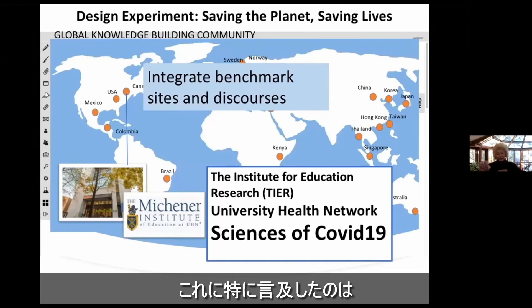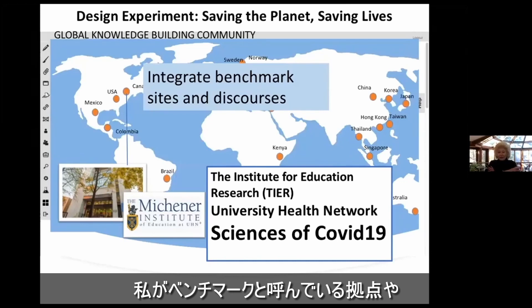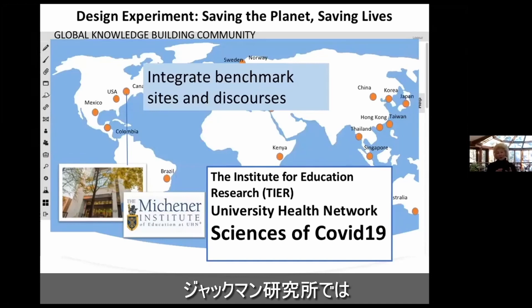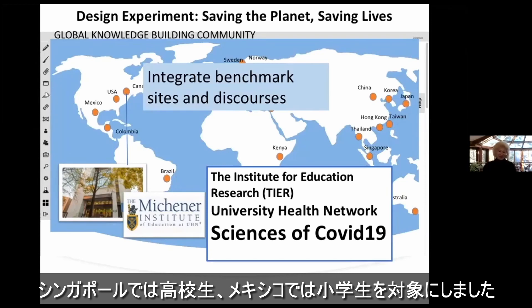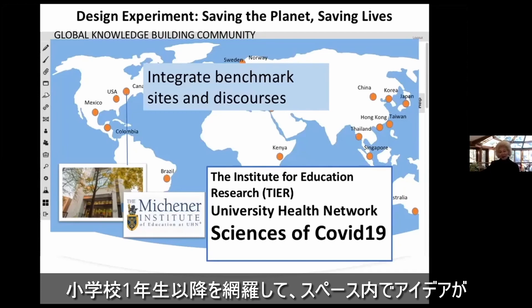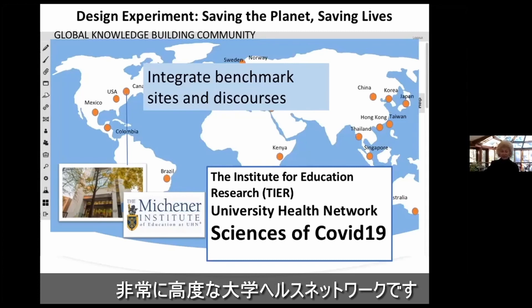I mentioned them in particular because they're a university enterprise. In the work we're talking about, it's really great to integrate what I'm calling benchmark sites and discourses — elementary students grades one to six at the Jackman Institute, high school sites in Singapore, elementary in Mexico, and a very advanced university health network — seeing how ideas align all the way from grade one through that advanced level.